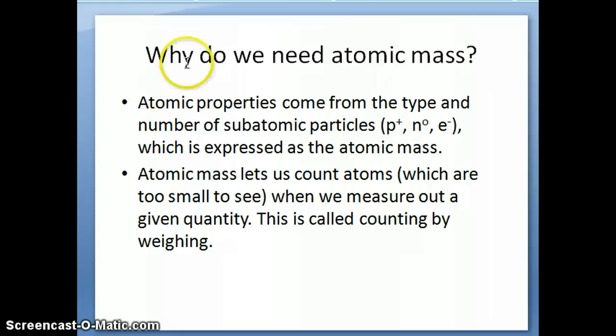The first question you need to ask is why do we need atomic mass, and there are a couple of important reasons. The first one is that atomic properties give rise to the properties of substances we're interested in, and all of these properties come from the type and number of subatomic particles in the atom—the number of protons, neutrons, and electrons. We can figure out how many protons, neutrons, and electrons we have if we know the atomic mass. So knowing atomic mass helps us figure out atomic properties and thereby the properties of substances.